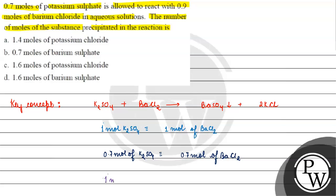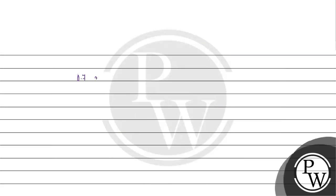We can also write that one mole of potassium sulfate gives one mole of barium sulfate. So from 0.7 moles of potassium sulfate, we have become 0.7 moles of barium sulfate precipitate.